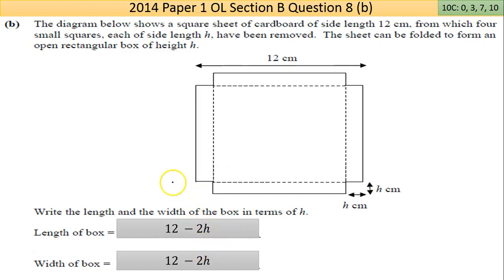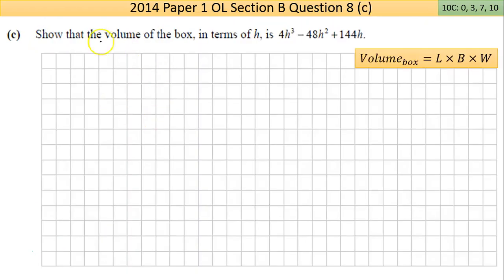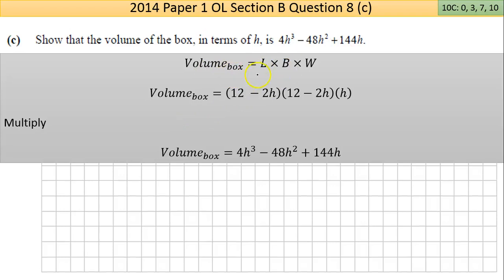Part C says show the volume of the box in terms of h is this, so they're giving you the answer, you just have to go ahead and find the volume. The volume of the box is length by breadth by width, all three sides by each other.